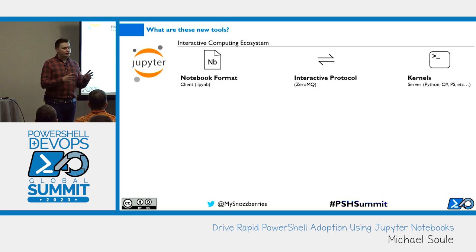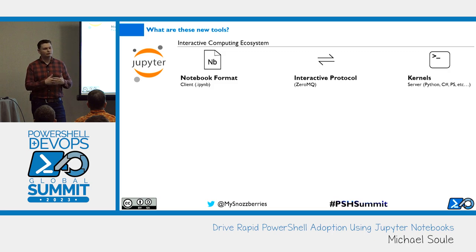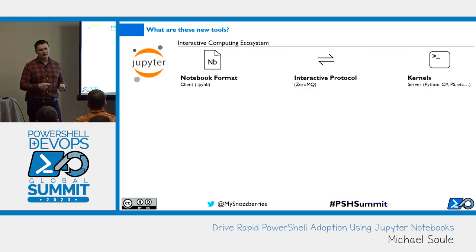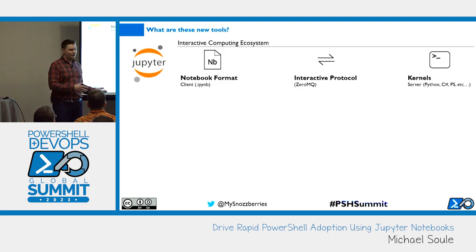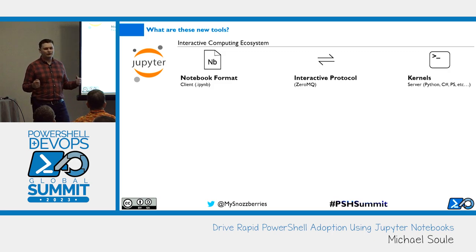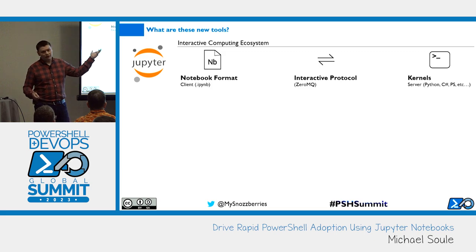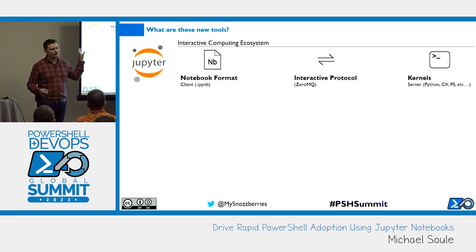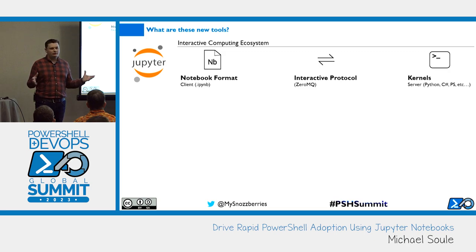So what is Jupyter? Jupyter is a big framework with three major components. You've got a file format — your notebook format — which is how you write and author content. That's going to be markdown and code cells. Those code cells can be different languages, everything from PowerShell to Python to R to OCaml. There are kernels for just about every use case. When you author that notebook and connect to those kernels, they can be running on a local server or sending messages between those code cells and a kernel running on a different server.